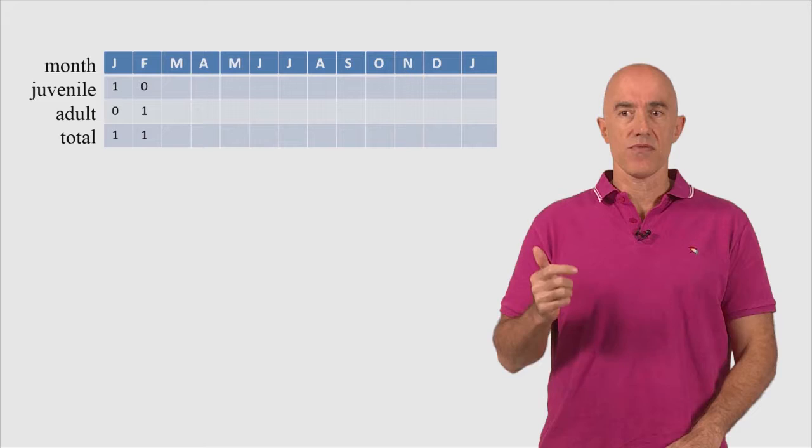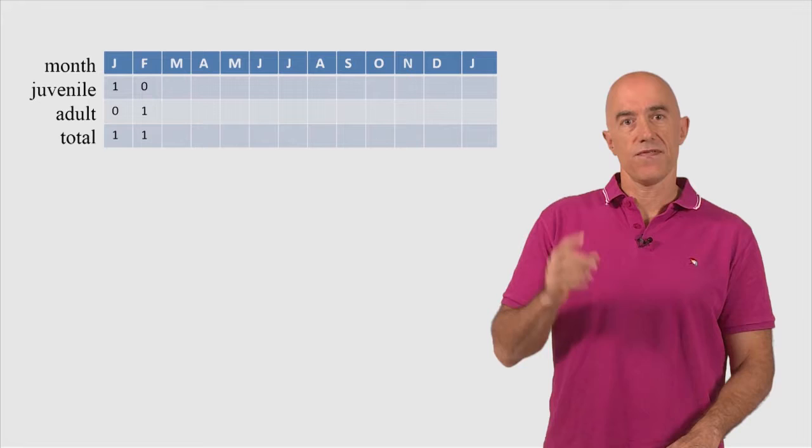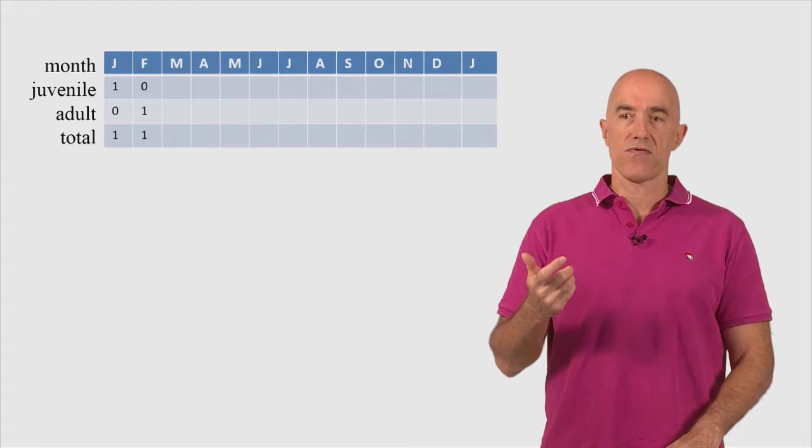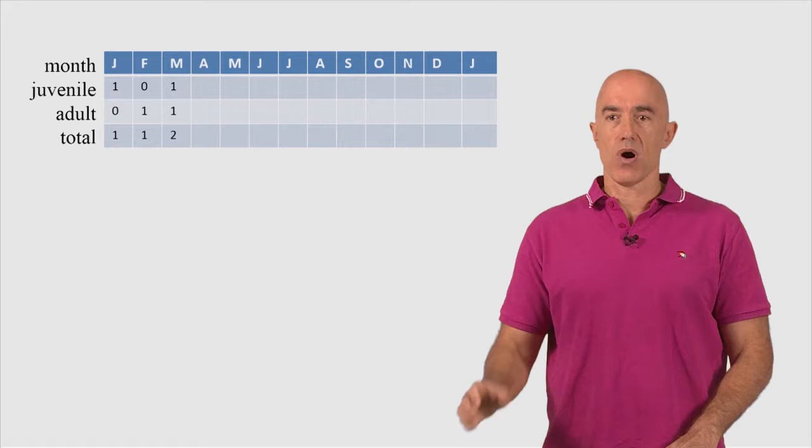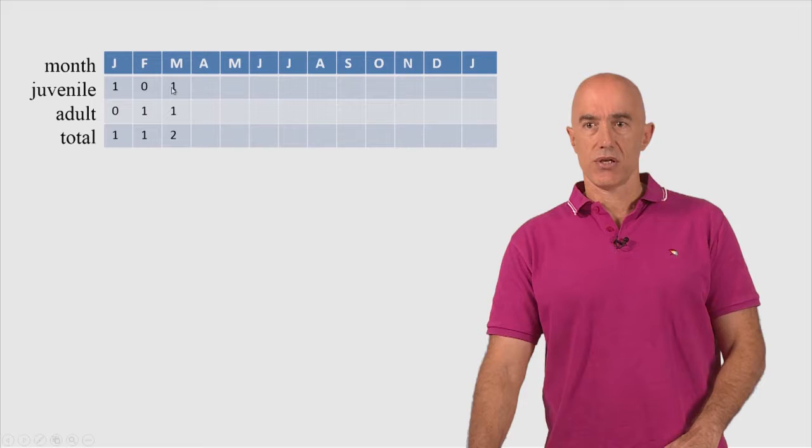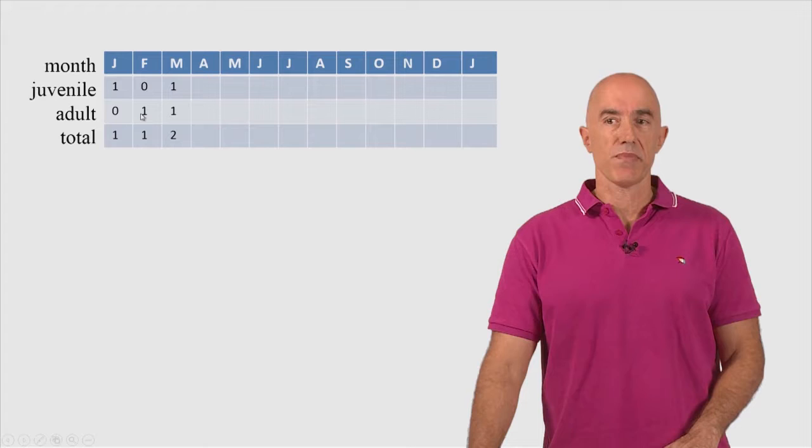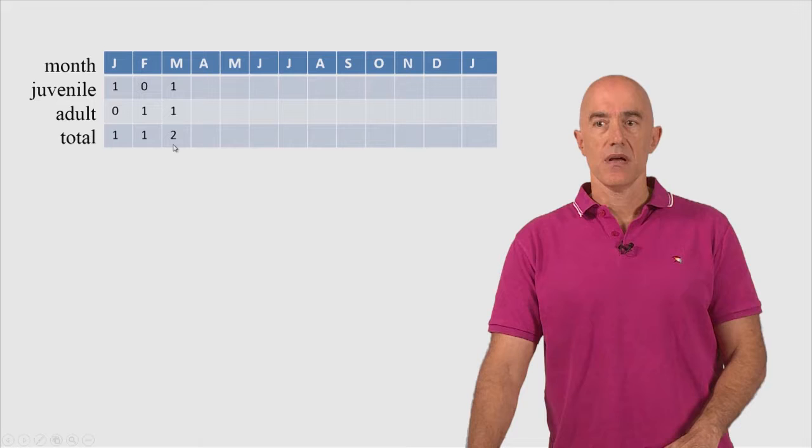Okay, then what happens in the next month? Well, those adult rabbits mated, the male and female mated. The female was pregnant for one month, and then gave birth to a newborn pair of rabbits on March 1st. So then we have one juvenile pair. On March, one juvenile pair, one adult pair. This adult pair is still the same adult pair we had in February, and two total rabbit pairs.